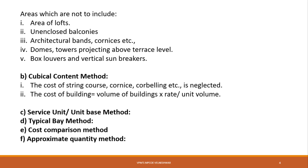In simple calculation, plinth area multiplied by the plinth area rate gives the approximate estimation of the building. The plinth area rate is calculated by considering a similar type of building in the nearby locality, finding the cost to construct that building, and dividing that cost by its plinth area to get the rate per square meter.